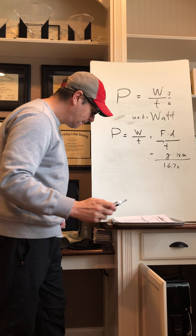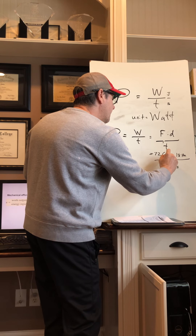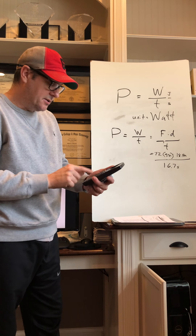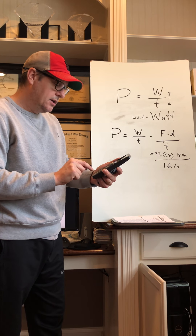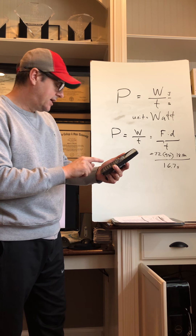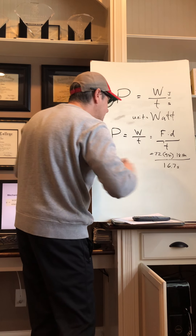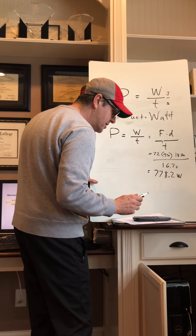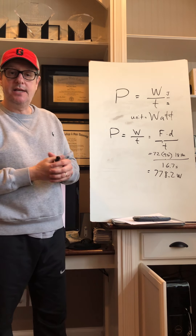The 16.7 seconds is the time while the disc stays aloft — that part was just there to throw you off. So: P = (m × g × d) / t = (72 × 9.81 × 18.4) / 16.7. Calculating: 72 × 9.81 × 18.4 = 12,996.288. Divided by 16.7, I get 778.2 watts.